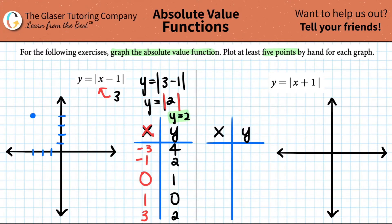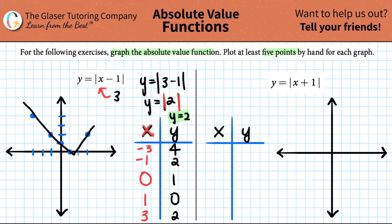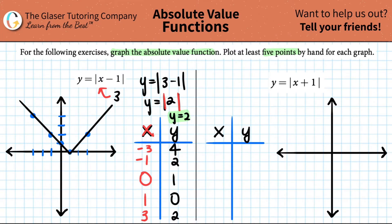Now we have our five points — let's plot them. We have negative three at four, negative one at two, zero at one, one at zero, and three at two. So I place those on the graph: negative three and four up here, negative one and two, zero and one, one and zero, and three at two. That's the first graph done.